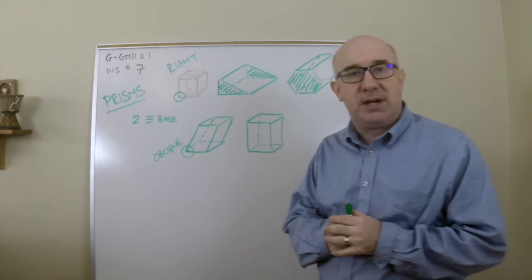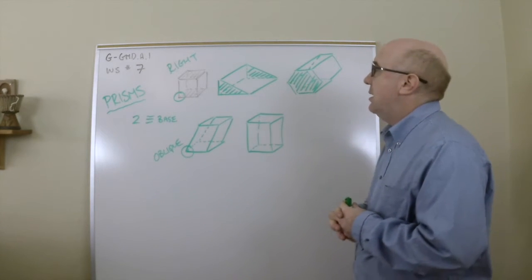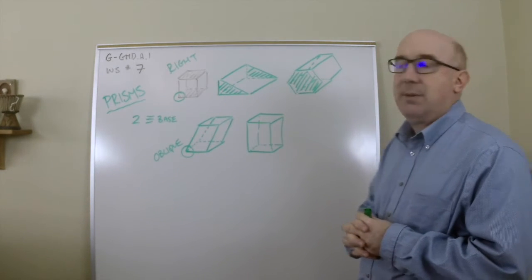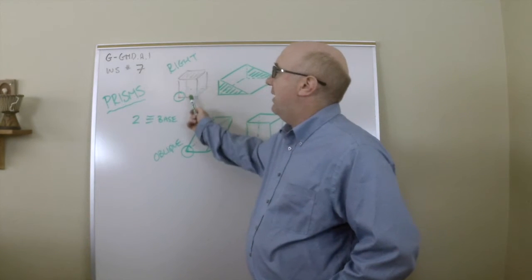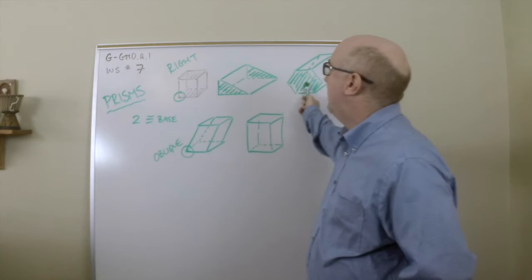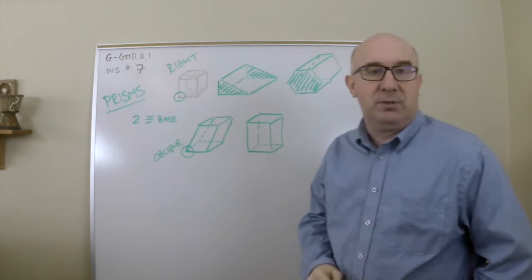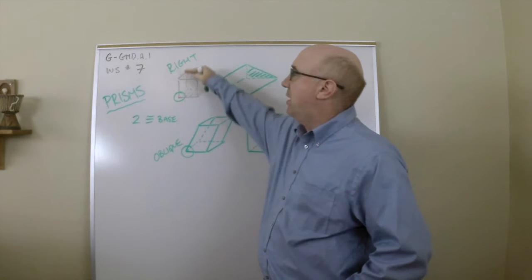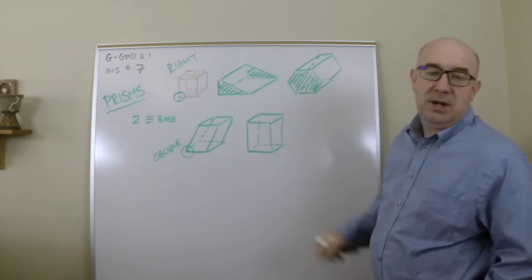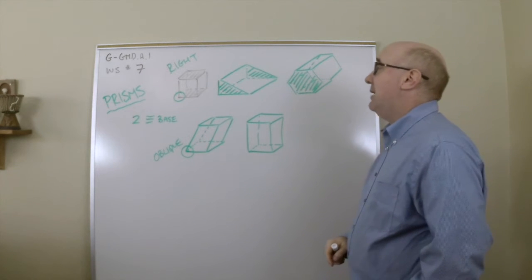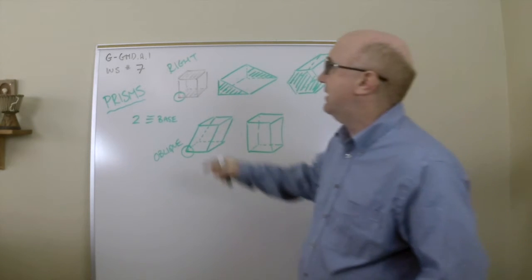First, let's talk about the characteristics of prisms. Prisms will have two identical bases always. There'll be two identical bases. So in this case two squares, this case two triangles, in this case two hexagons.